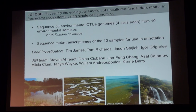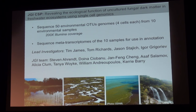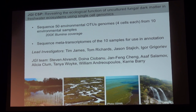With that in mind, Igor Grigorev approached me encouraging me to write this CSP to tackle this problem using single cell genomics. The title of our project focuses mostly on freshwater ecosystems. Ideally we want to sequence 50 environmental species with four cells of each and then use metatranscriptomics to bolster the gene models. The lead investigators are here, and the work I'm going to talk about next has been done largely by JGI — particularly Steven Arndt and Doina Ciobanu have done a lot of the bench work and analysis, so they deserve the credit.